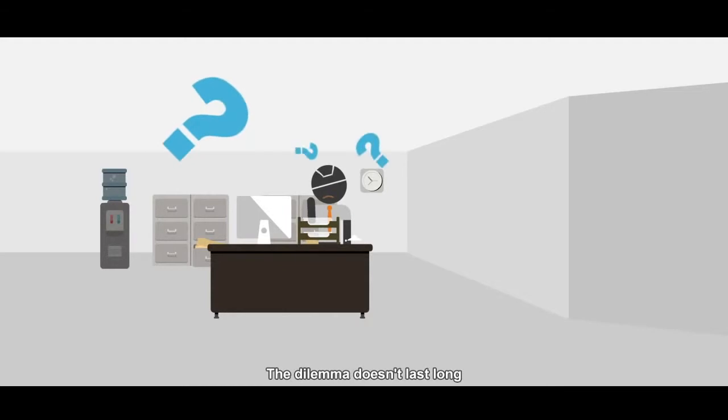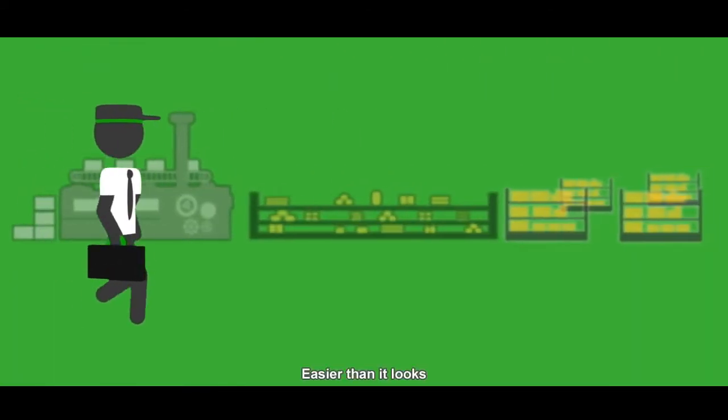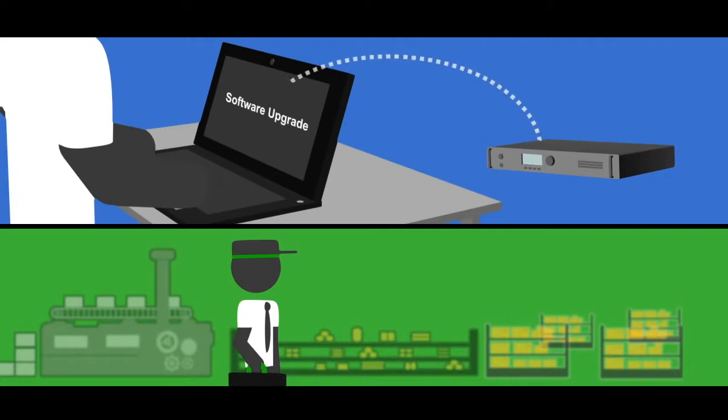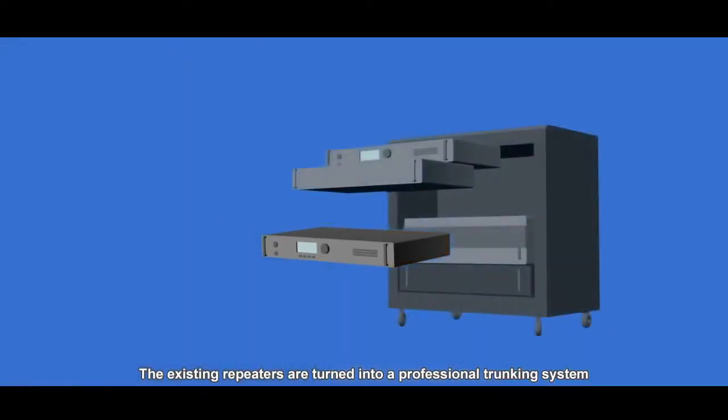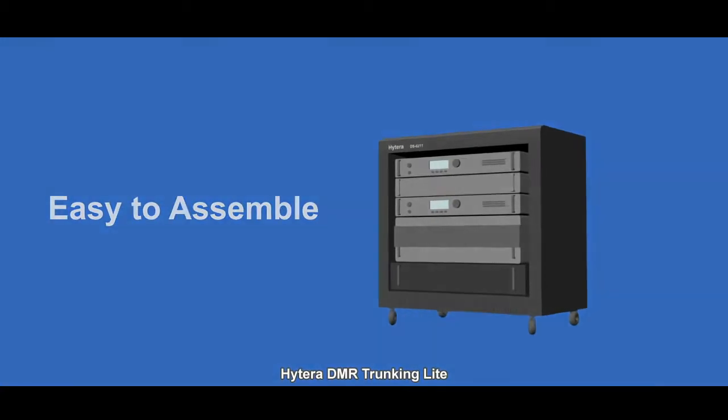The dilemma doesn't last long since the company decides to upgrade the DMR conventional transceiver to trunking mode. Easier than it looks, the system upgrade can be accomplished via software upgrade and limited hardware add-on. The existing repeaters are turned into a professional trunking system, Hytera DMR trunking light.